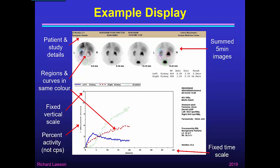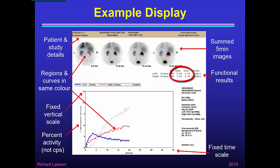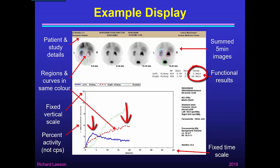The summed five-minute images are all display-scaled to the same maximum so they can be interpreted properly. We have some key functional results: the relative function of left and right kidneys as a percentage, the uptake as a percent at two minutes and at three minutes — for example, at two minutes there's 2.8% in the left kidney and 1.5% in the right kidney — giving an indication of absolute function to compare from one study to another. We also have the time to peak: 3.5 minutes for the left kidney and 18.2 minutes for the right kidney. Other figures are processing parameters used by the nuclear medicine department to check that the processing has been done correctly.